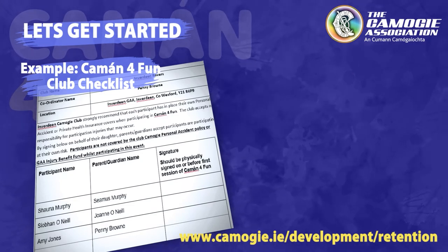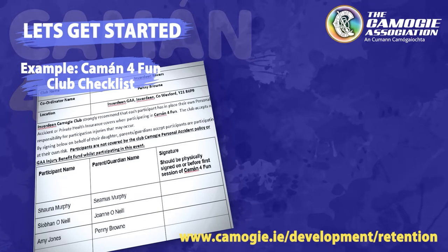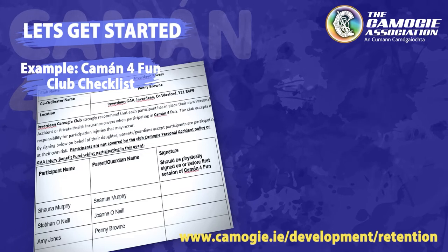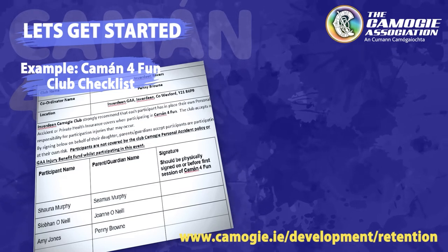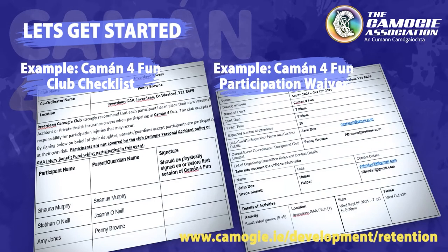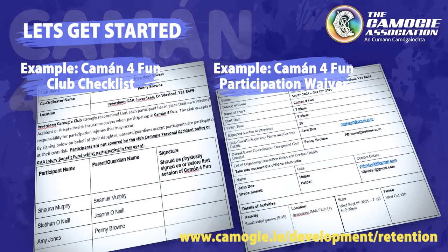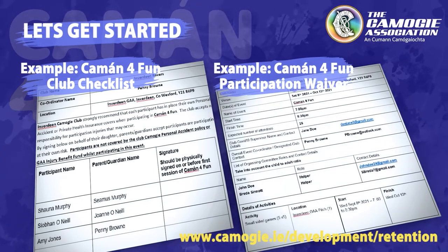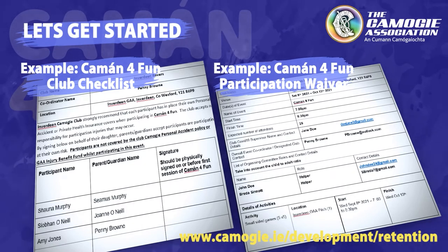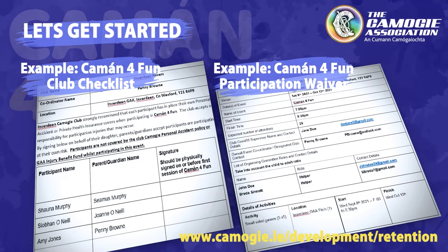The vast majority of clubs will have all the necessary items already in place, so this document is just to double check and be sure. The same is to be said for the participation waiver. Any participant wishing to take part, be they a club member or not, must sign this document. As the targeted age group are under the age of 18, it must be a parent or a guardian who signs on the participant's behalf before taking part in Come On For Fun.